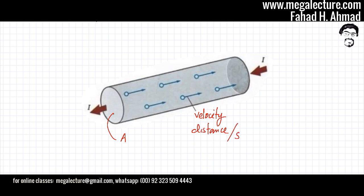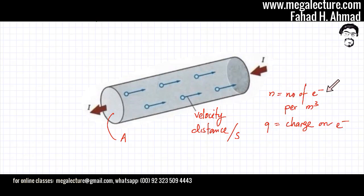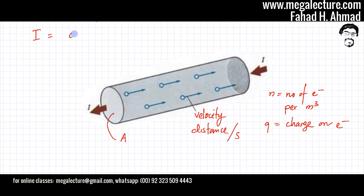So, distance would be in meters — distance per second. N is the number of electrons per meter cube and Q is the charge on an electron. Now, we know the formula of current: if I write the formula of current, it's basically the charge that is flowing per unit time.